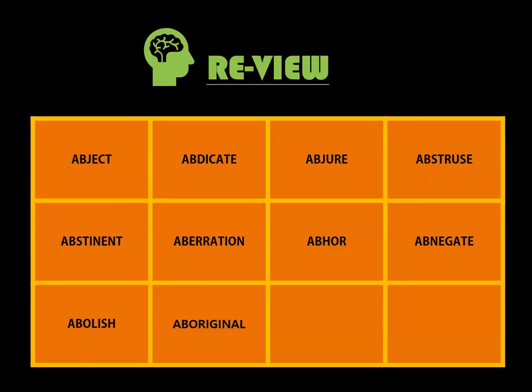Okay, let's review the words. Abject: throw away, miserable. Abdicate: indicate away, surrender. Absurd: faith away, abandon. Abstruse: structure away, complicated. Abstinence: stay away, restrain.